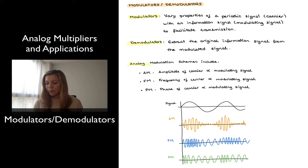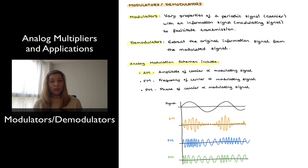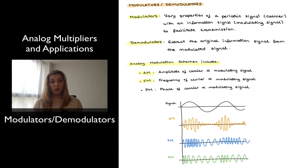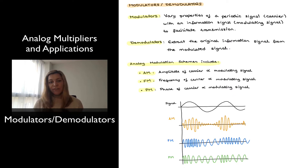Some of the most frequent include amplitude modulation, or AM, where the amplitude of the carrier signal is changed and made proportional to the modulating signal; frequency modulation, where the frequency of the carrier signal is changed and made proportional to the amplitude of the modulating signal; and phase modulation or PM, where the phase of the carrier signal is varied in proportion to the amplitude of the modulating signal.